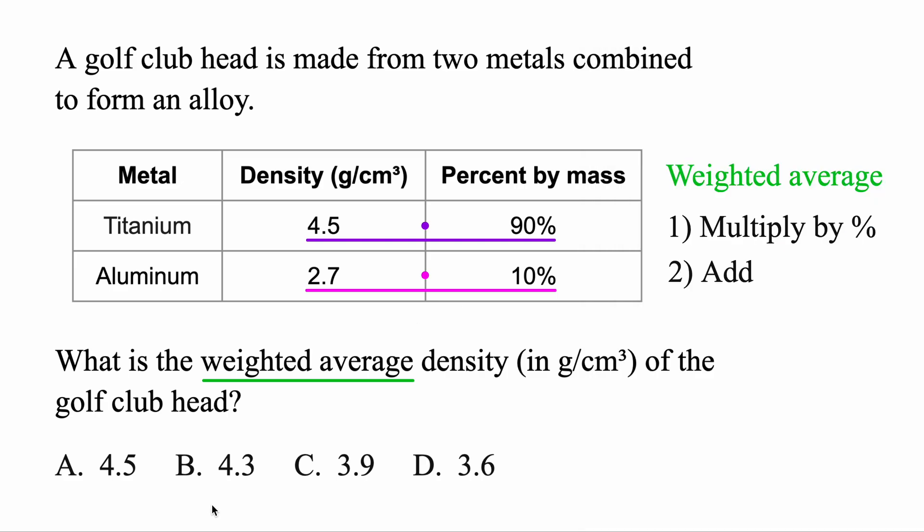Closest answer is B. So 4.3, that's the weighted average density for this golf club head. And these are based on real values, so it's interesting how you can combine the properties of two different metals. It looks like titanium mostly for its strength, and then aluminum for a little bit of its lightweight or flexible properties. Okay, and let's look at one final scenario that these show up.